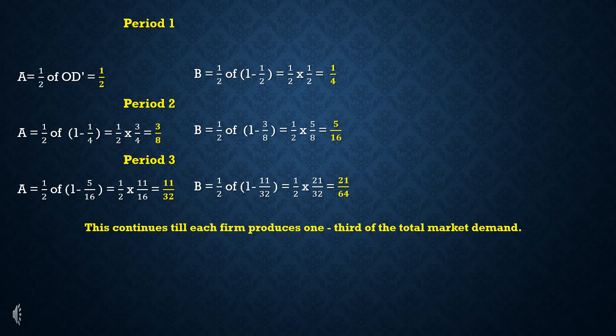Explaining numerically: initially, Firm A supplies half (1/2) of the total market demand. Firm B then produces 1/2 of the remaining market, which is 1/2 of (1 - 1/2), equal to 1/4 of the total market.